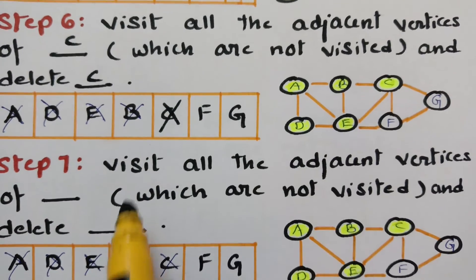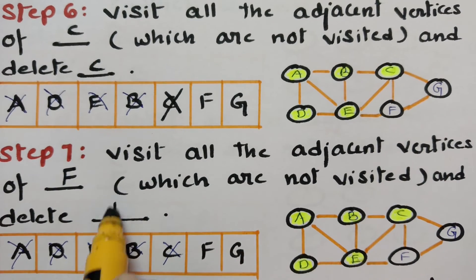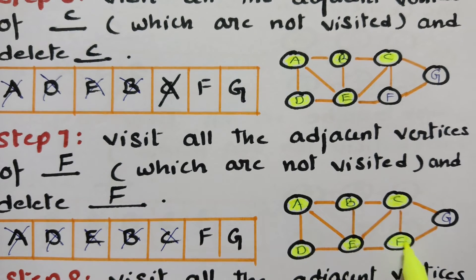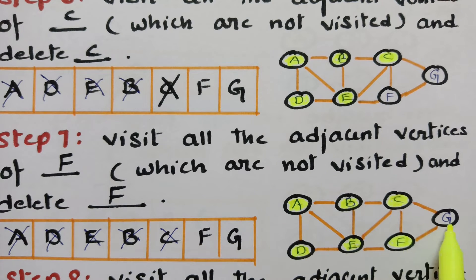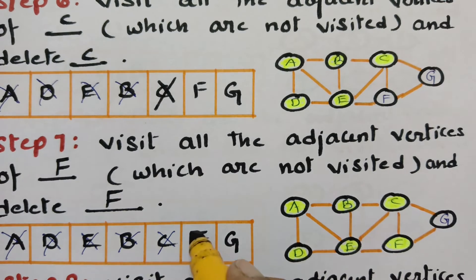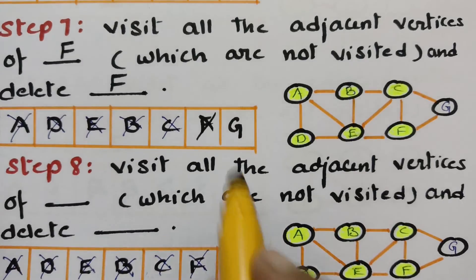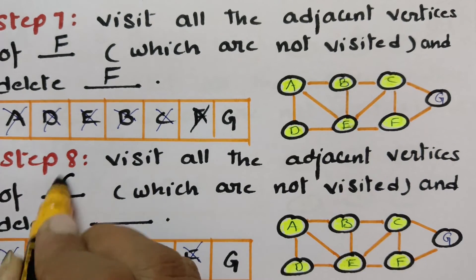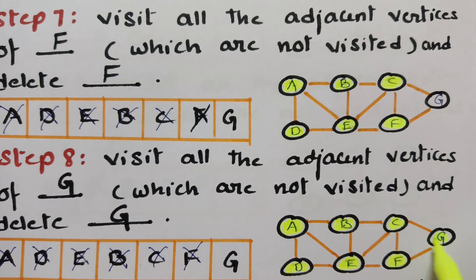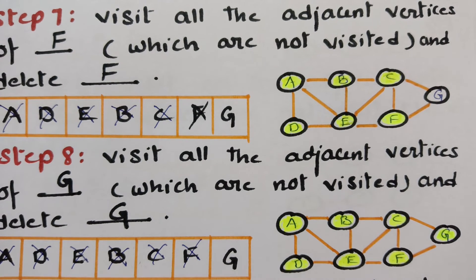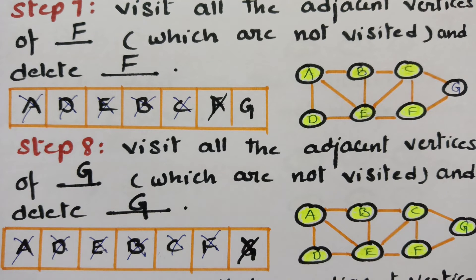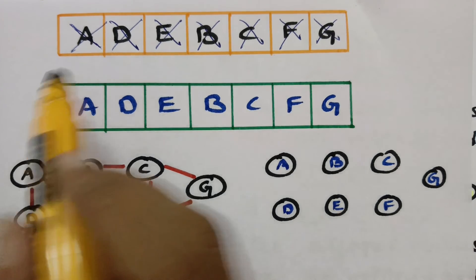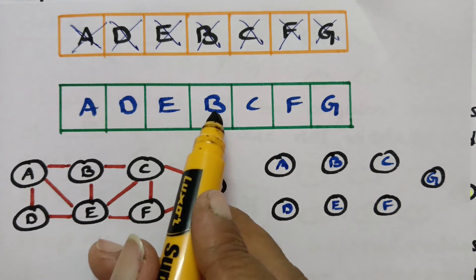Step 7 — visit all adjacent vertices of F which are not visited and delete F. E is already posted, C is already posted, G is already posted — so delete F. Step 8 — visit all adjacent vertices of G and delete G. C is already posted, F is already posted — so delete G from the queue. These are the eight steps. Now the queue is empty, so we stop the process. The deleted vertices in order are: A, D, E, B, C, F, G.